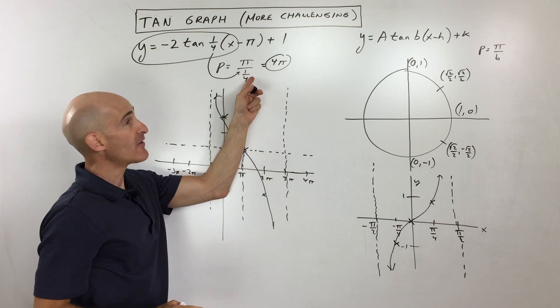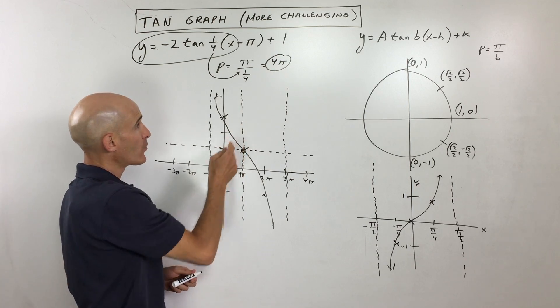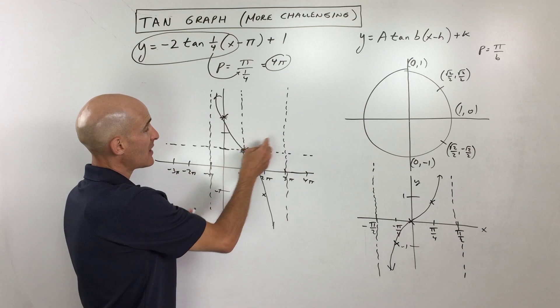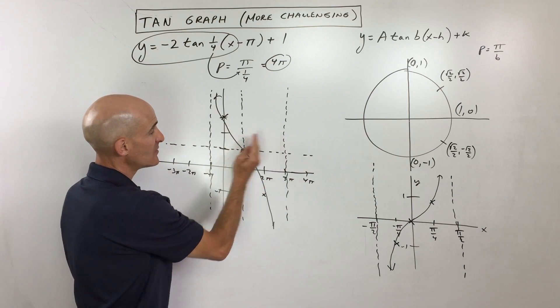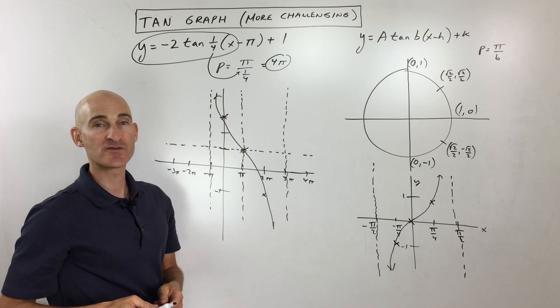Also calculate your period by doing pi divided by b. Then take that scale and divide this period into four pieces, and then make that your scale. And then what you can do from here, calculate where your asymptotes are. Half is going to be to the right of that point, half is to the left. And then you can sketch your other points from there.